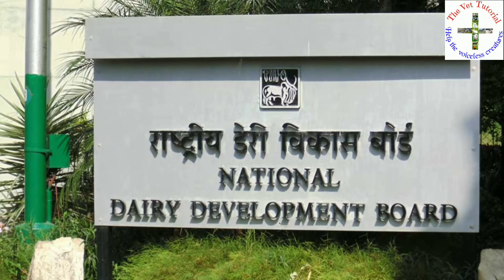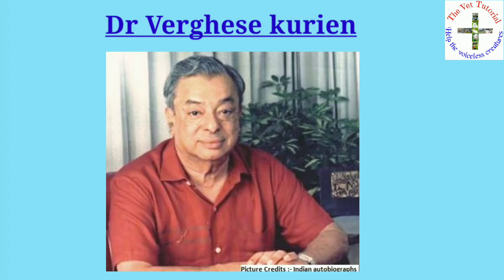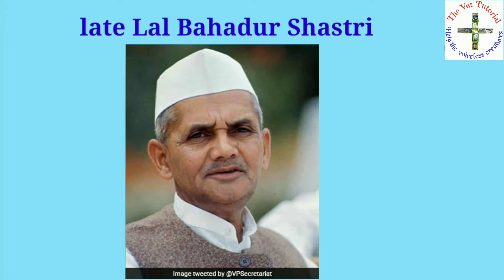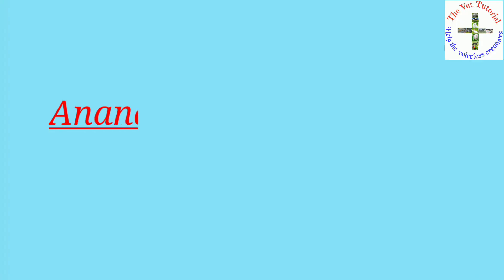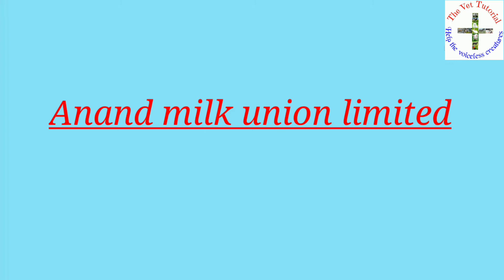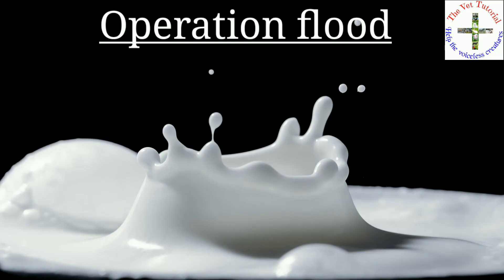NDDB headquarters is in Anand, Gujarat. Its founder is Dr. Verghese Kurien, and it was founded on 16 July 1965 by the late Lal Bahadur Shastri to extend the success of Kaira — that is, AMUL — to other parts of India. AMUL is Anand Milk Union Limited, founded on 14 December 1946.